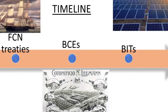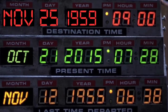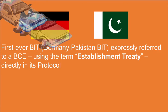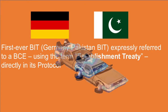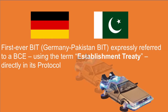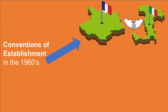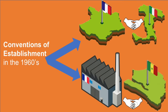Indeed, the first-ever modern-age BIT, the German-Pakistan BIT, expressly referred to a BCE using the term 'establishment treaty' directly in its protocol. In fact, the scope of application of BCEs and BITs was so intertwined that in the 1960s, the term 'convention of establishment' was interchangeably used to designate both international bilateral treaties between two countries as well as genuine investment contracts between one country and the foreign private companies coming from another country.